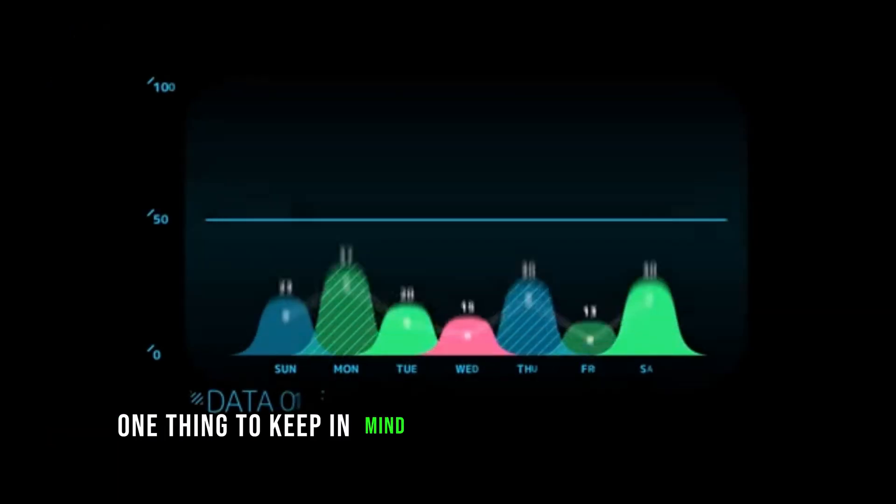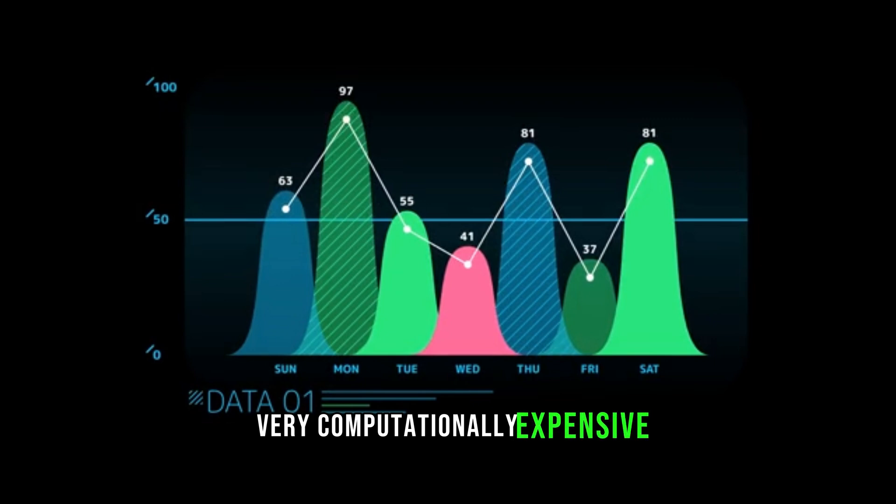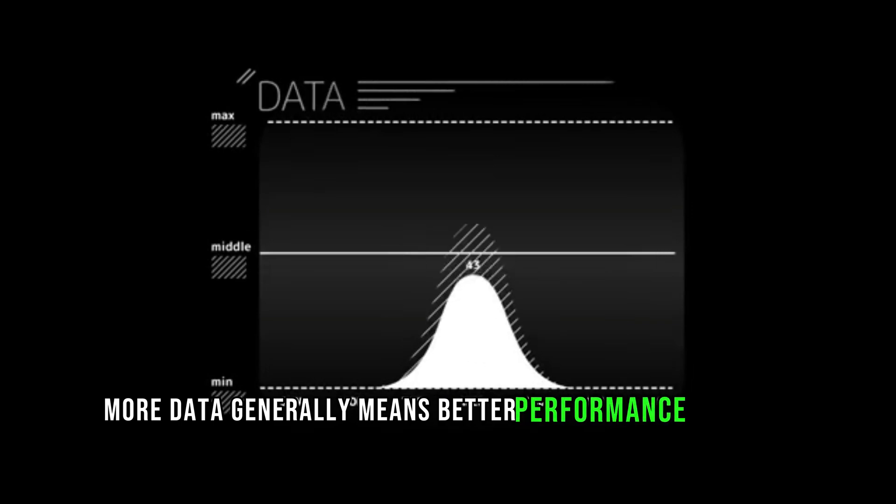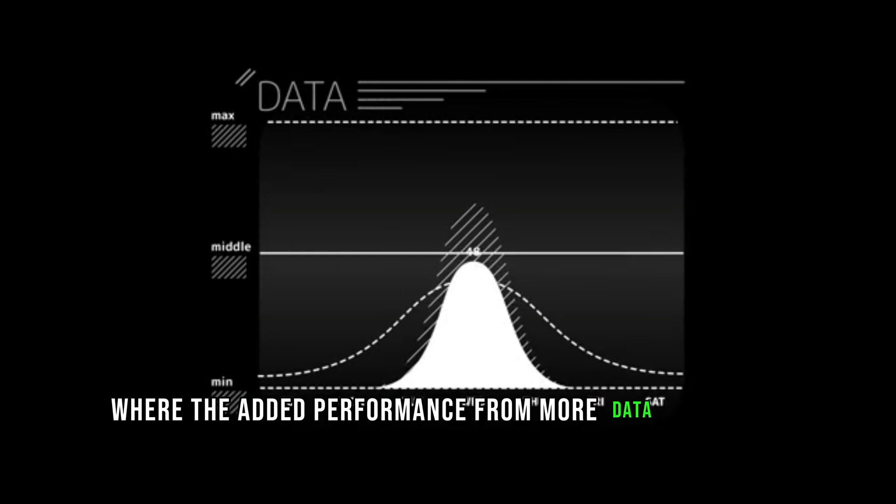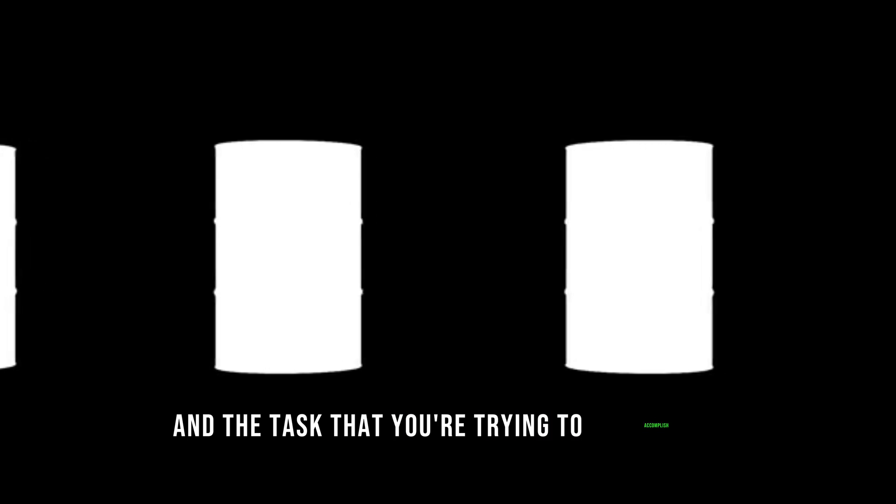One thing to keep in mind is that training models can be very computationally expensive. So typically, you want to have as much data as possible. More data generally means better performance for your model. However, there is such a thing as too much data where the added performance starts to diminish. It really depends on the size of your model and the task you're trying to accomplish.